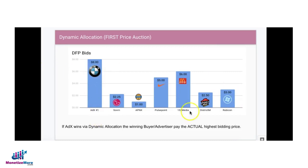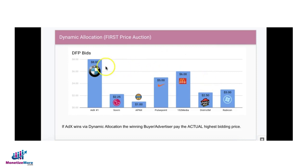Now what happens in a first price auction? Ad Exchange wins on dynamic allocation — the advertiser is willing to pay $8 for a given ad request, and these are the competing bids in DFP. In a first price auction, Ad Exchange wins but it's not going to look at the second highest competing line item anymore. It always pays the actual highest bidding price — so if the bid was $8 and it wins, the advertiser pays $8.